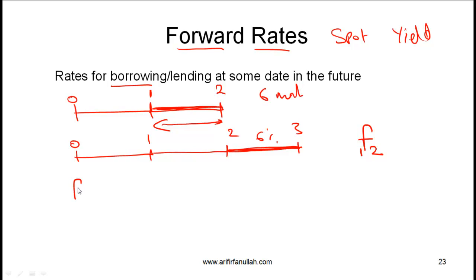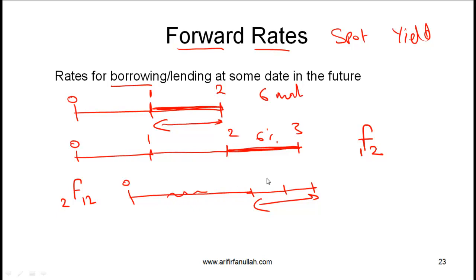So if you see the notation 2F12, this means that you are borrowing for two periods and the loan will begin after 12 periods. If each period is six months, that means you are borrowing after six years and you are borrowing for two periods, which is essentially one year. Remember: the first number is the duration of the borrowing or lending, and the second number is when the borrowing or lending begins.